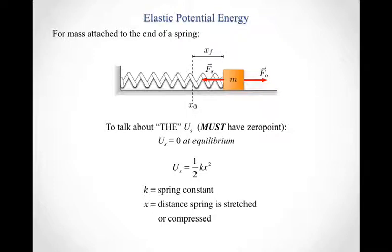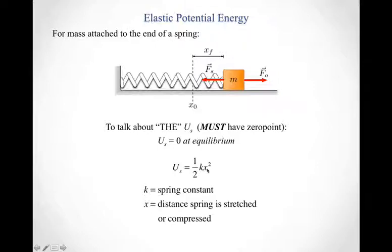Just like with gravitational potential energy, when we talk about elastic potential energy, what we really mean is the elastic potential energy relative to the point where it equals zero. We need to know where our zero point is. Unlike in the gravitational case where we could choose that zero point, in the elastic case we don't have a choice — it's set at equilibrium. So the elastic potential energy always equals zero when the mass is at equilibrium. We can then calculate the elastic potential energy using PE = one-half kx squared, where x is the distance the spring has been stretched or compressed. This always gives the elastic potential energy relative to what it would be at equilibrium.